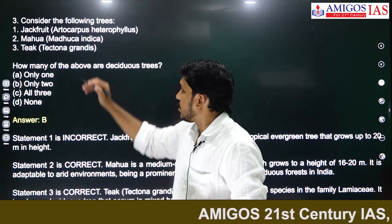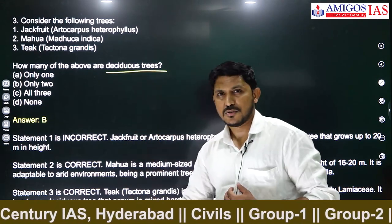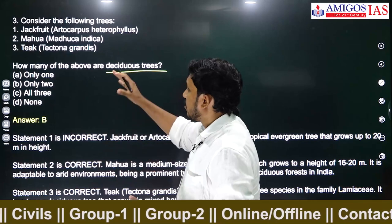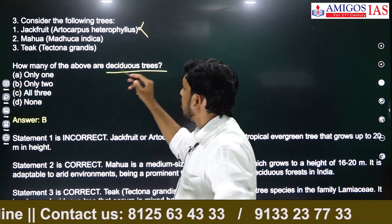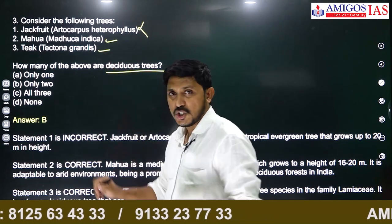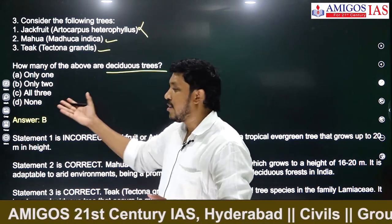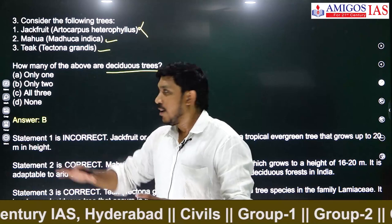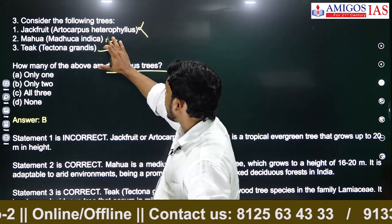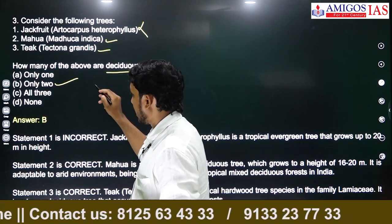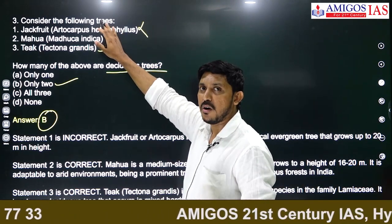Consider the following trees: jackfruit, mahua, and teak. The question asks which are deciduous trees. This is a geography-environment factual question. Jackfruit is actually an evergreen tree, so eliminate it. Mahua and teak are deciduous trees. So the answer is 2 and 3 — only option B is the right answer, because jackfruit is evergreen, not deciduous.